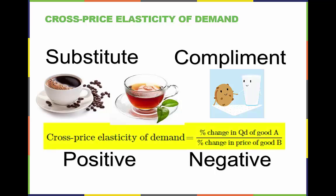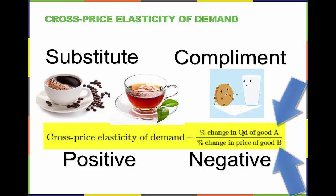This is what the equation for cross price elasticity of demand looks like. It is important to remember that the equation is calculated fundamentally the same as other elasticity coefficients, except in this case we use the quantity of one product in the numerator and the price of another in the denominator.